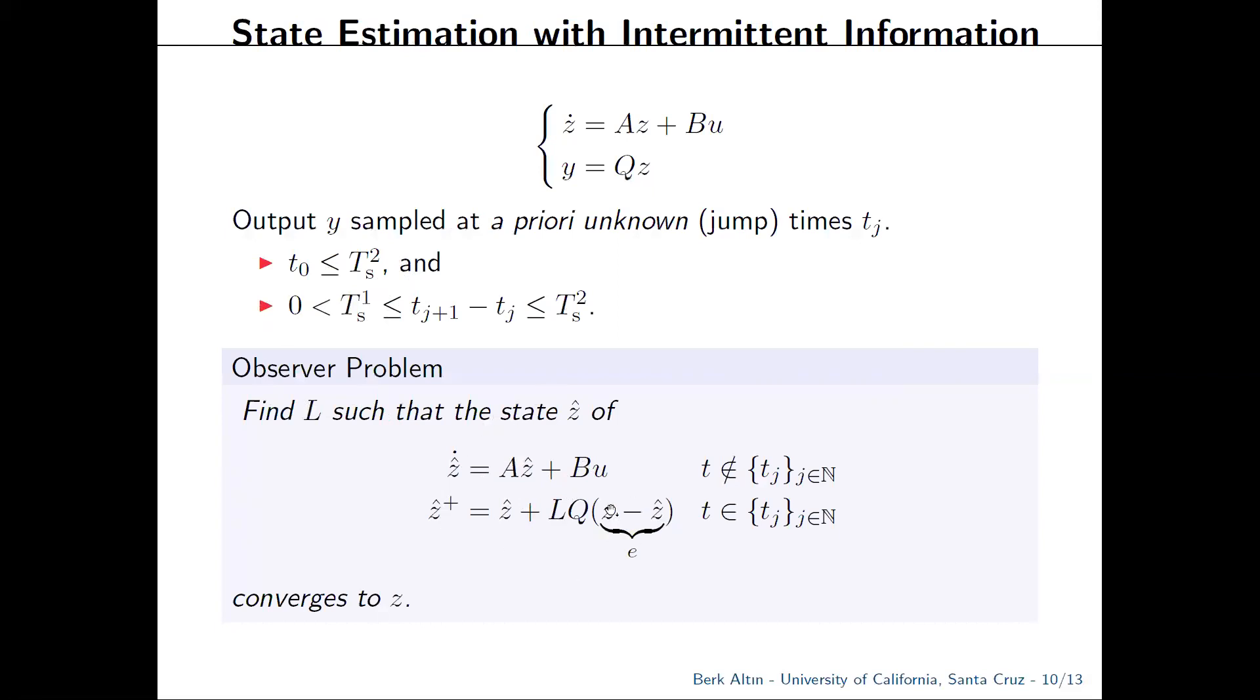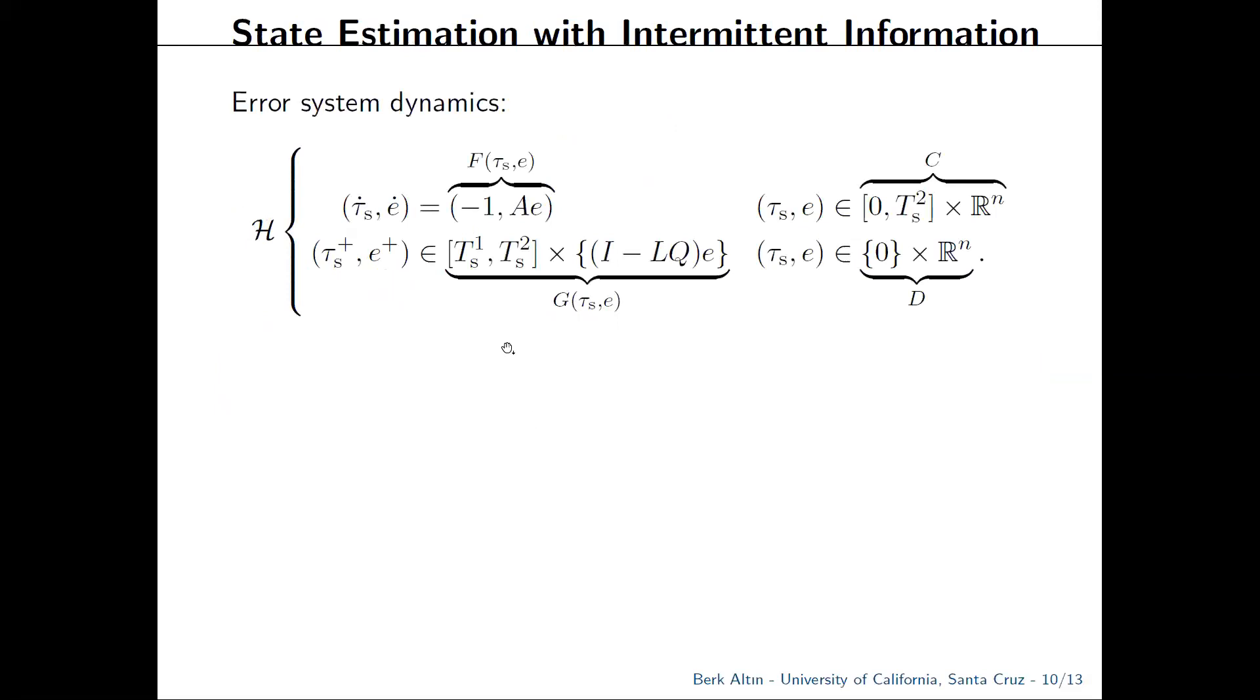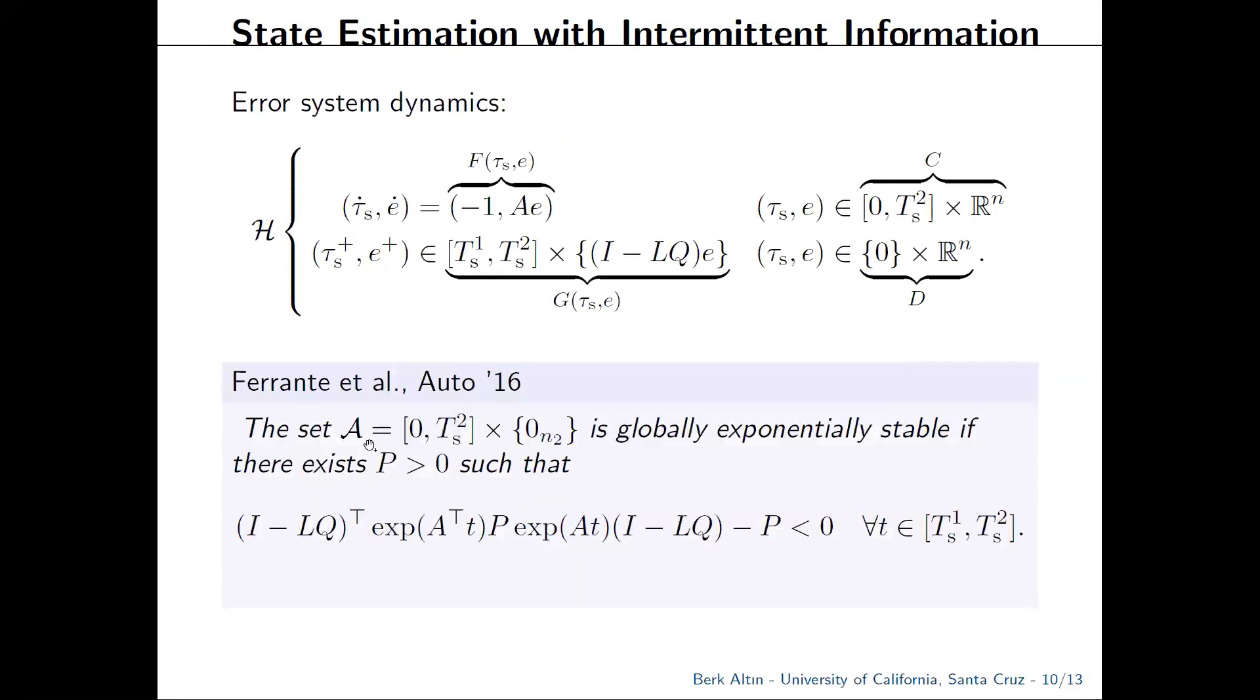Defining the estimation error in the usual sense, we can transform this problem into a hybrid inclusion form similar to the sample data system, and then guarantee asymptotic stability by the following parametric LMI. It is a difficult problem, but you can address it with a polytopic embedding technique detailed in the paper by Francesco Ferrante.